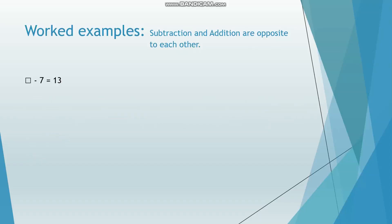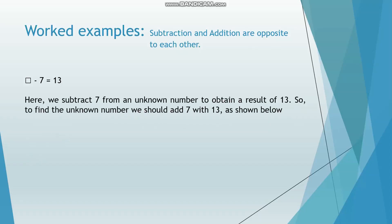Let's see another example. A blank box minus 7 is equal to 13. Here we subtract 7 from an unknown number to obtain a result of 13. So to find the unknown number, we should add 7 with 13, as shown below. The blank box will be equal to 7 plus 13, which is 20.